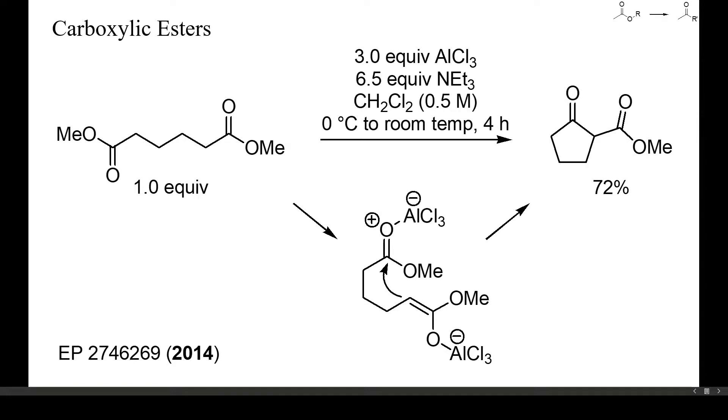Even aluminum enolates sometimes undergo Claisen condensation. In this example, methyl adipate underwent Dieckmann condensation in the presence of an excess of triethylamine and aluminum chloride.